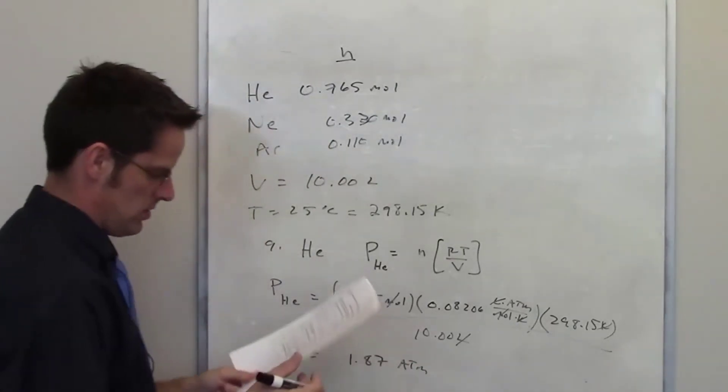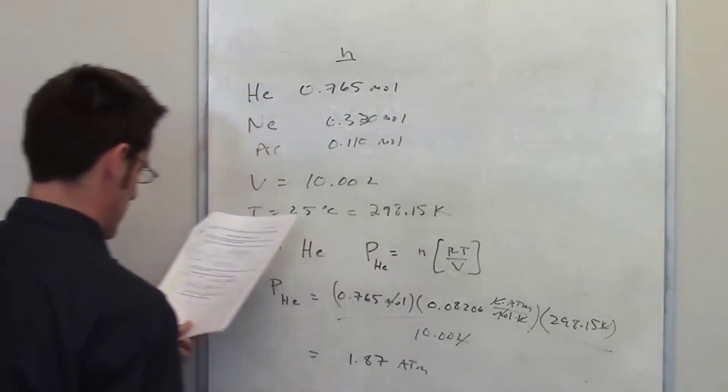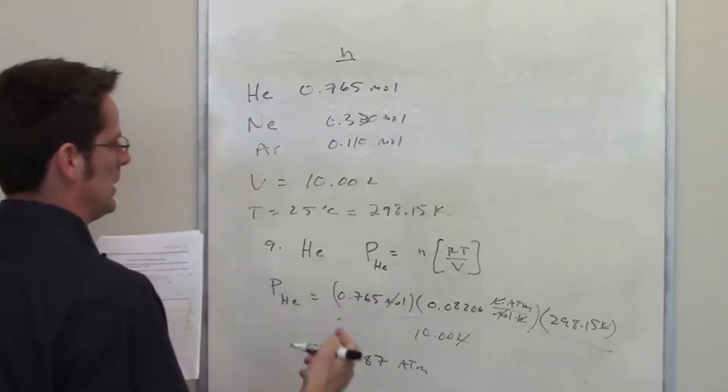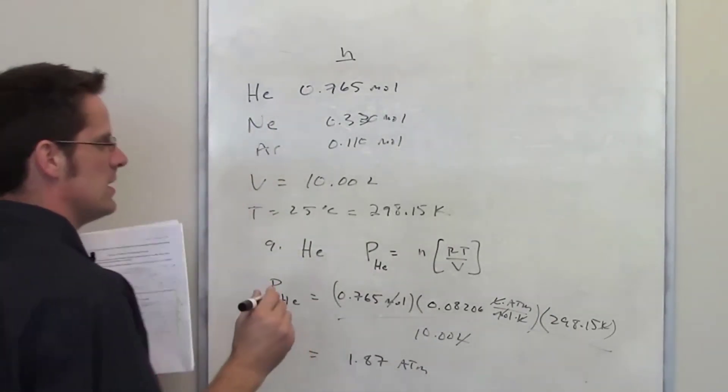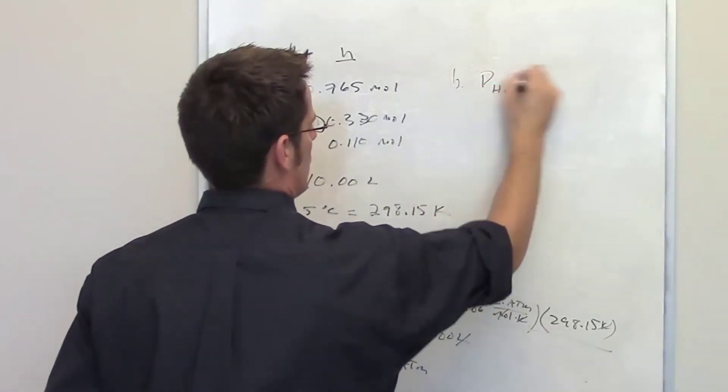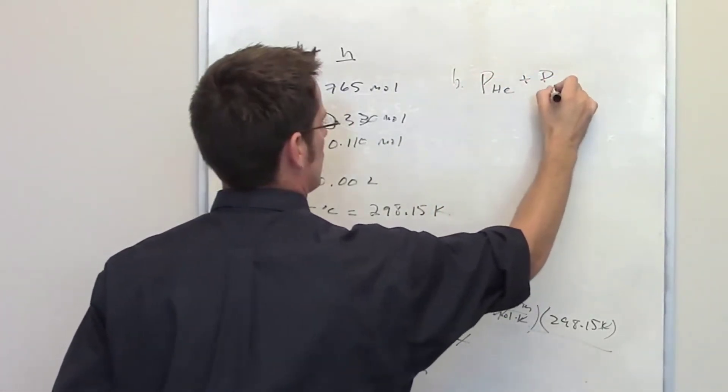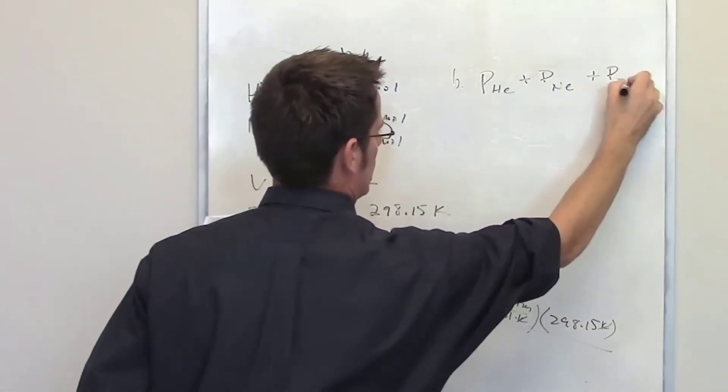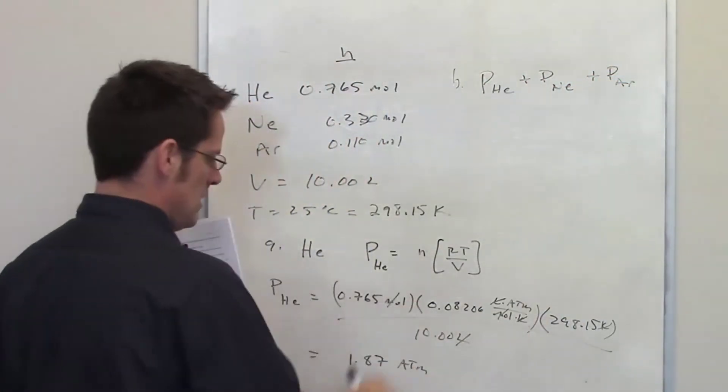In part B of this question, I'm asked to calculate the total pressure for the entire system. Here's how you do that: you take the individual pressure of helium and you add to that the individual pressure of neon, and you add to that the individual pressure of argon. According to Dalton's law...